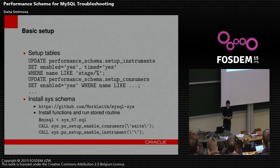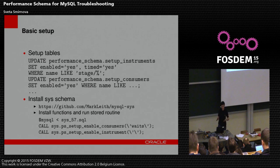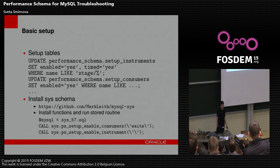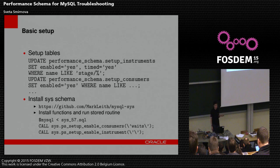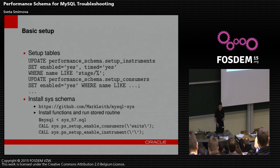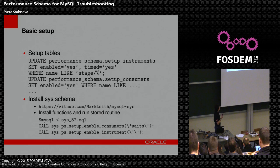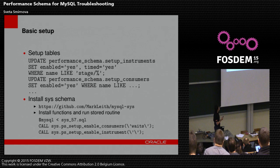Before using Performance Schema, you need to set it up — that means you need to enable those instruments which you want to use, and disable what you don't want. You can do it by either writing a query against Performance Schema, or by installing sys schema, which is a set of views and stored routines that help you use Performance Schema. It was originally written by Mark Leith, but the project has grown and is open for contribution. This schema enables consumers for troubleshooting waits, and enables everything for all instruments.